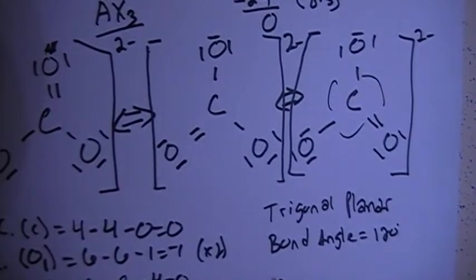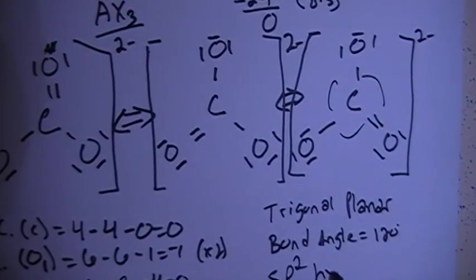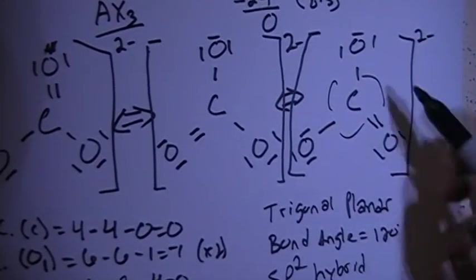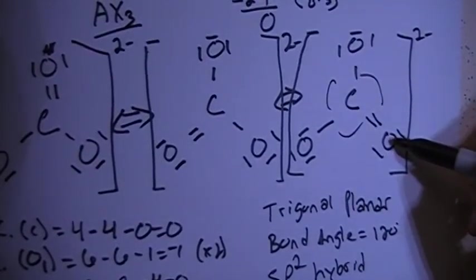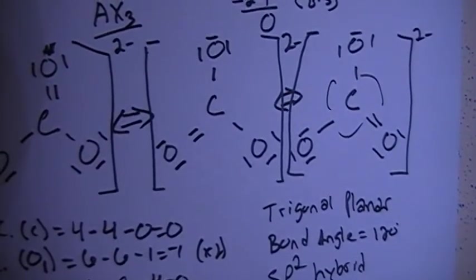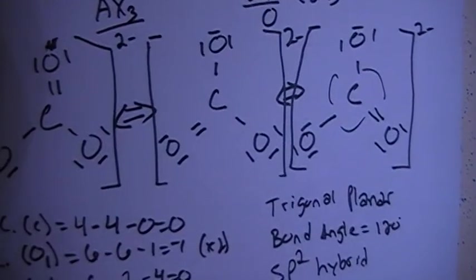In terms of hybridization, it's going to require SP2 hybrid orbitals, because there's one, two, three bonding sites, so SPP, SP2, so that's your hybridization.